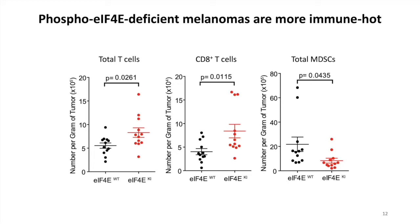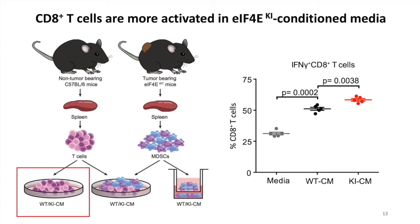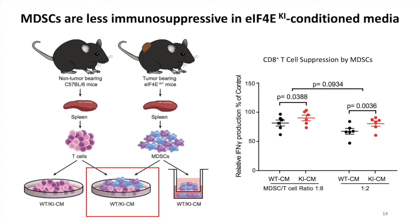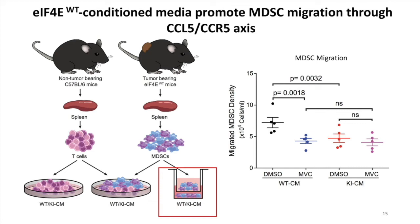To understand how the altered secretome could affect immune cell populations within the tumor microenvironment, we first showed that the knock-in tumors have higher infiltration of T cells and lower infiltration of MDSCs, the myeloid-derived suppressor cells, meaning that they are more immune-hot compared to the wild-type tumors. We showed that CD8-positive T cells are more activated in the knock-in conditioned media, and MDSCs are also less immunosuppressive when cultured in knock-in conditioned media. It is known that CCL5 facilitates MDSC recruitment. We showed that wild-type tumor-conditioned media, which contains higher concentration of CCL5, attracts MDSCs better than the knock-in media. When we disrupted the CCL5-CCR5 interaction using Maraviroc, this phenotype was abolished, suggesting that wild-type tumors promote MDSC recruitment through high expression of CCL5.